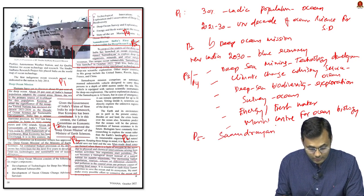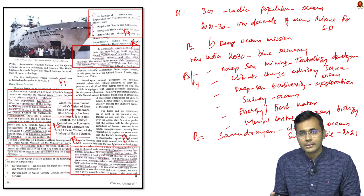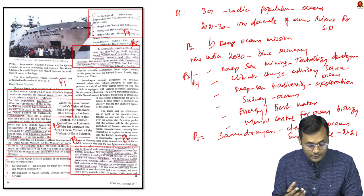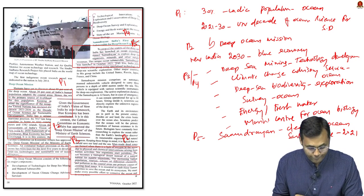Samudrayan is a deep sea ocean expedition — a submersible developed by India launched in 2021. It is a platform like a submarine used to understand deep sea oceans. This is a technology only a few countries have, and India has developed its own to understand ocean life.